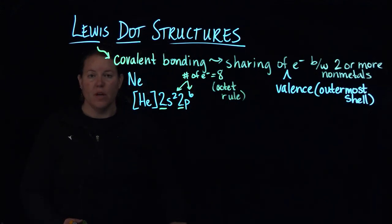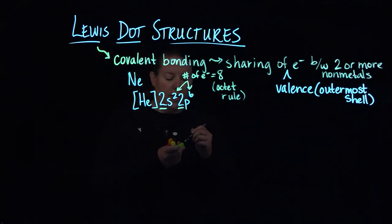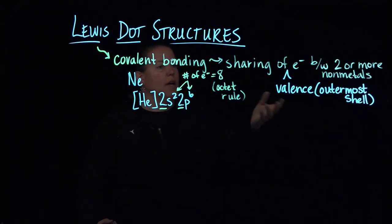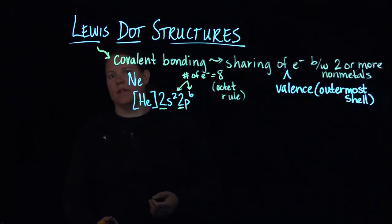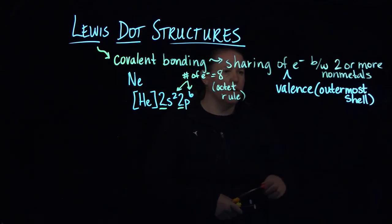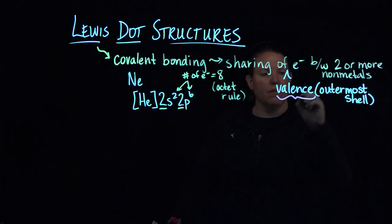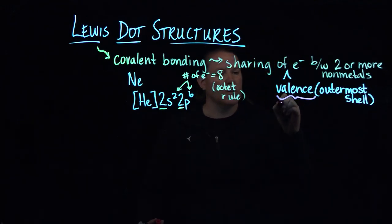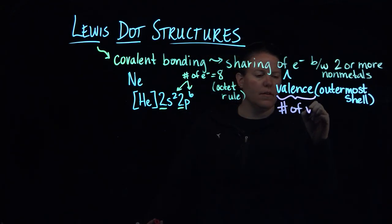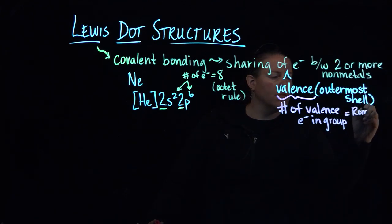So a couple of things here: How are we going to find the number of valence electrons? How are we going to put together the octet rule? Well, to find the valence shell or to find the number of valence electrons in a group for some element in a group, you just look at the roman numeral group number.